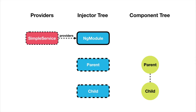We have the injector tree in the middle of the screen, the component tree to the right, and the providers being configured on the left. Right now SimpleService is being provided on the root NgModule, so we only have one global injector resolving the dependency. Therefore every time we request an instance of SimpleService it's always going to return the same instance.